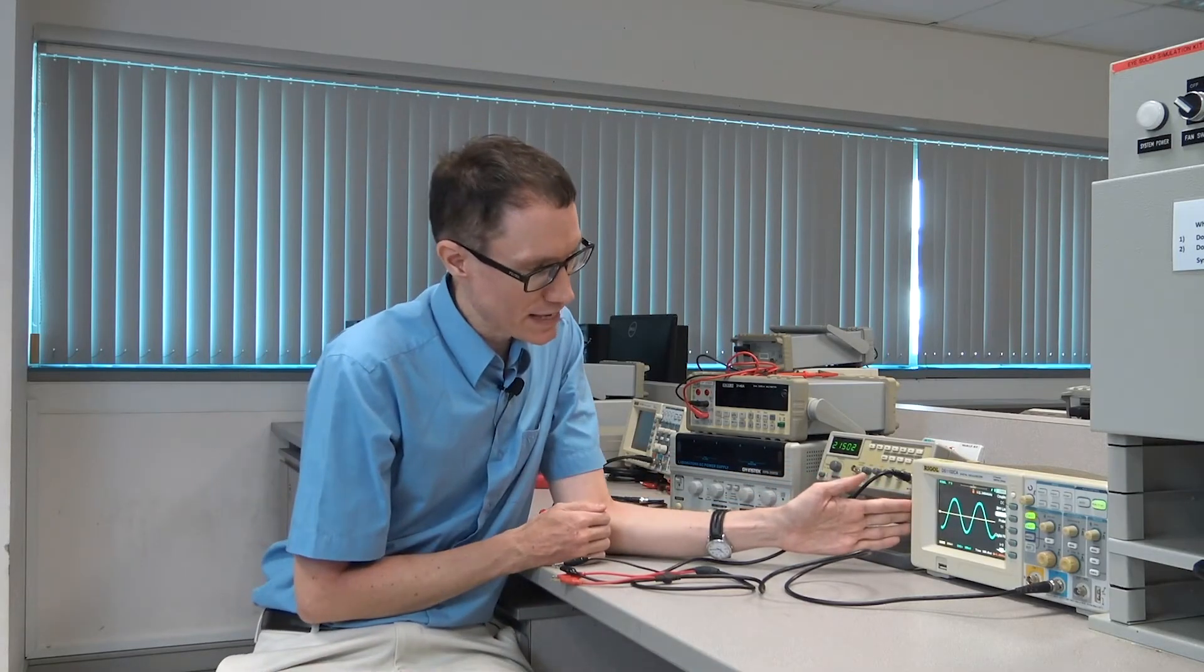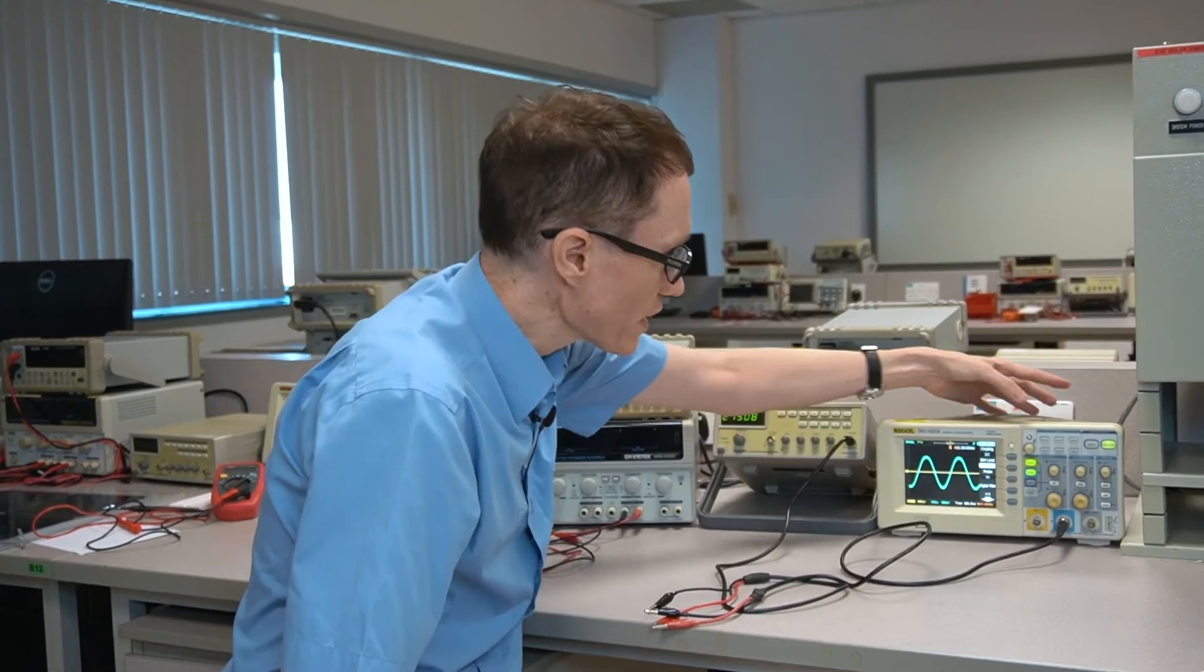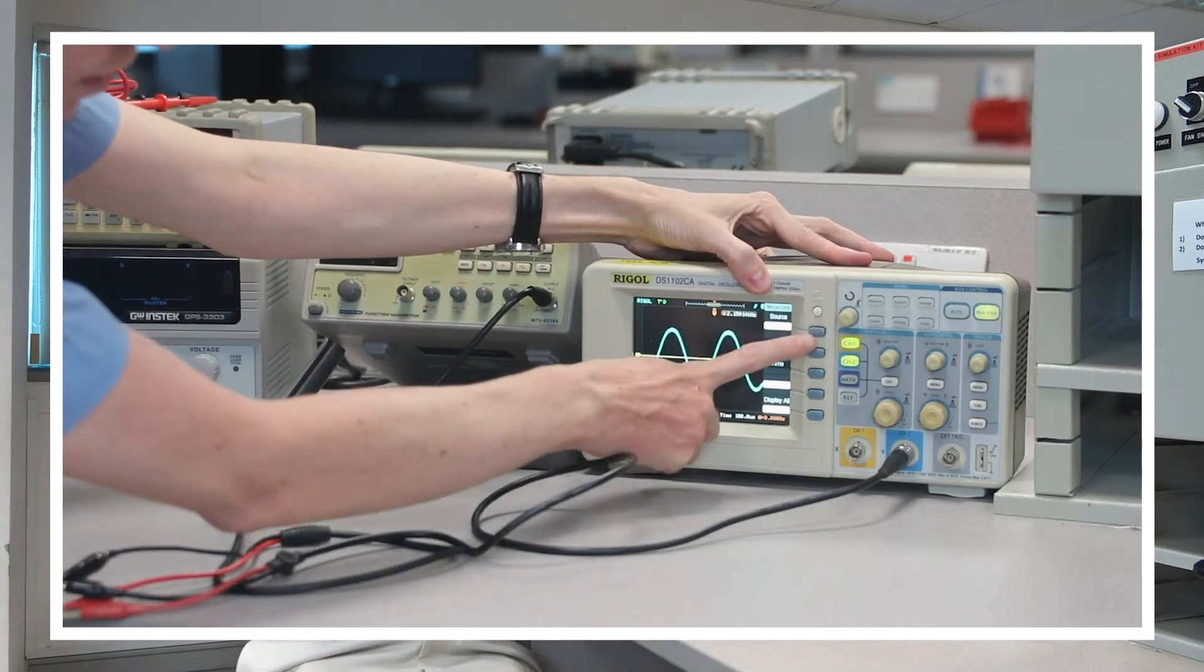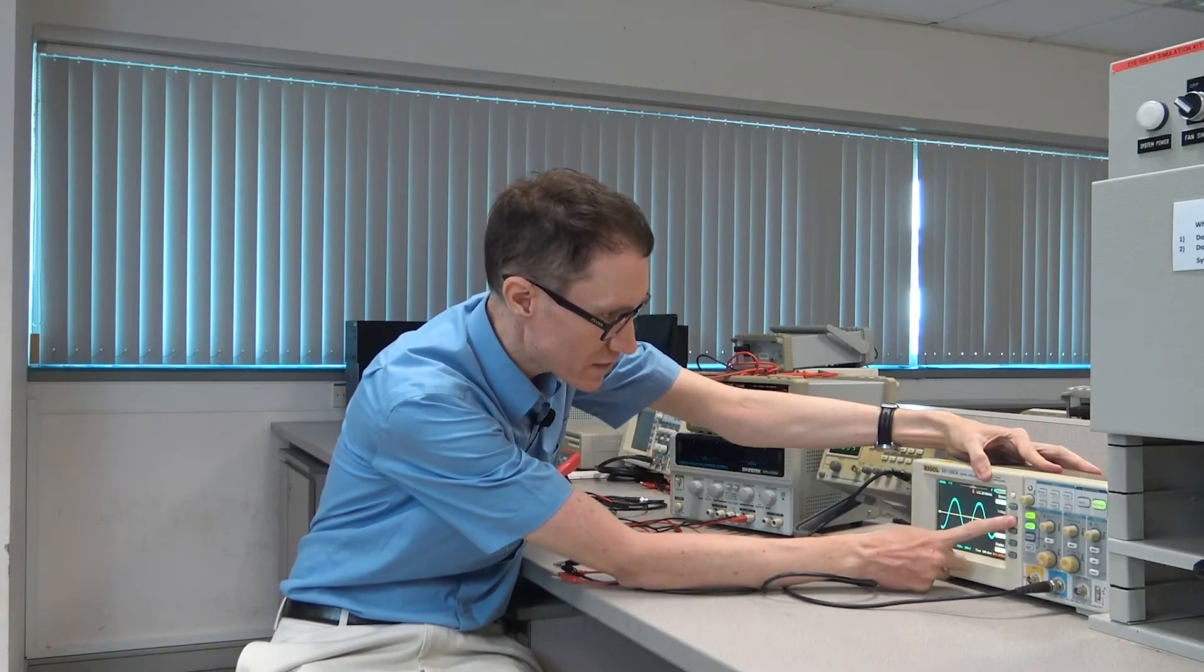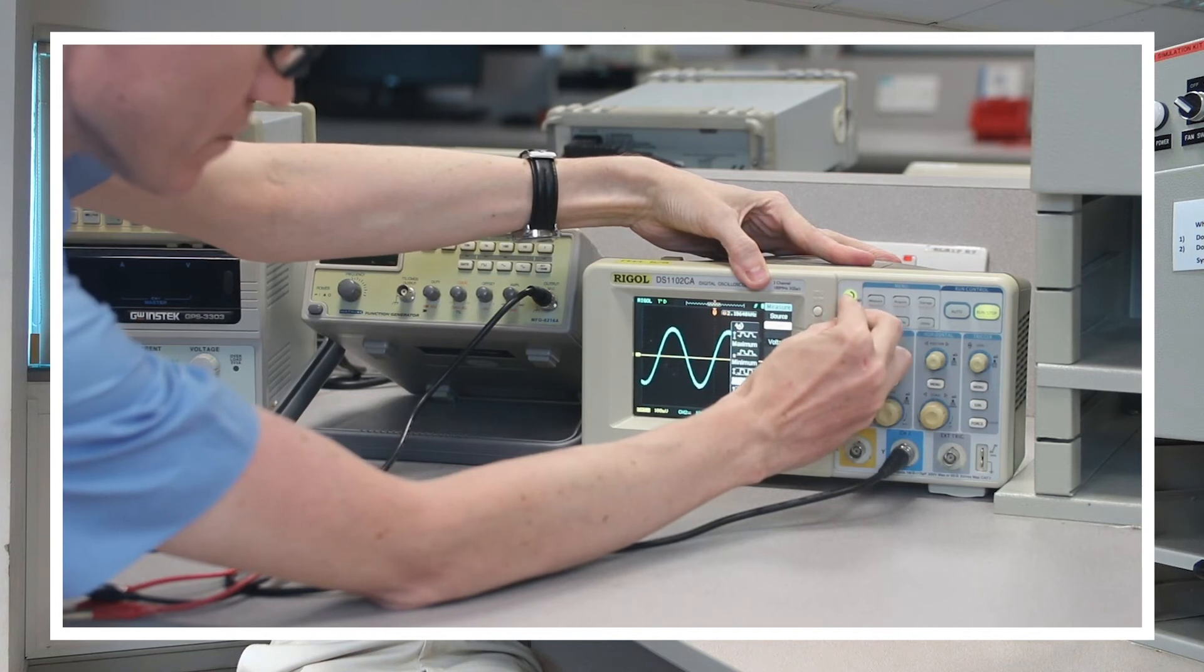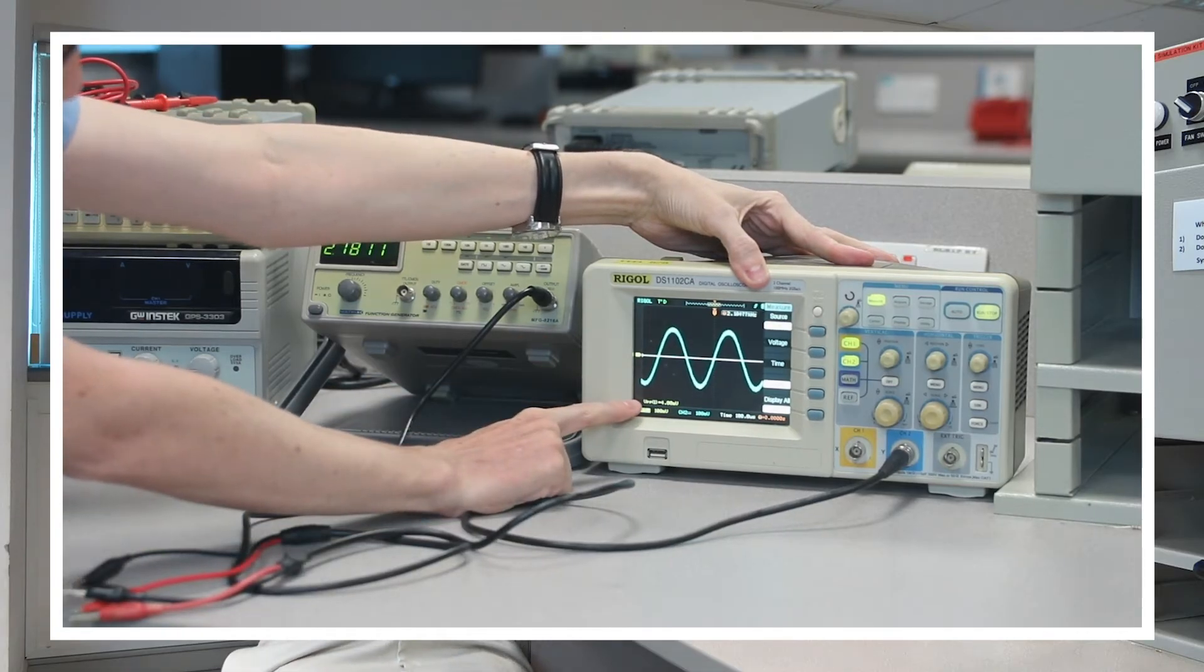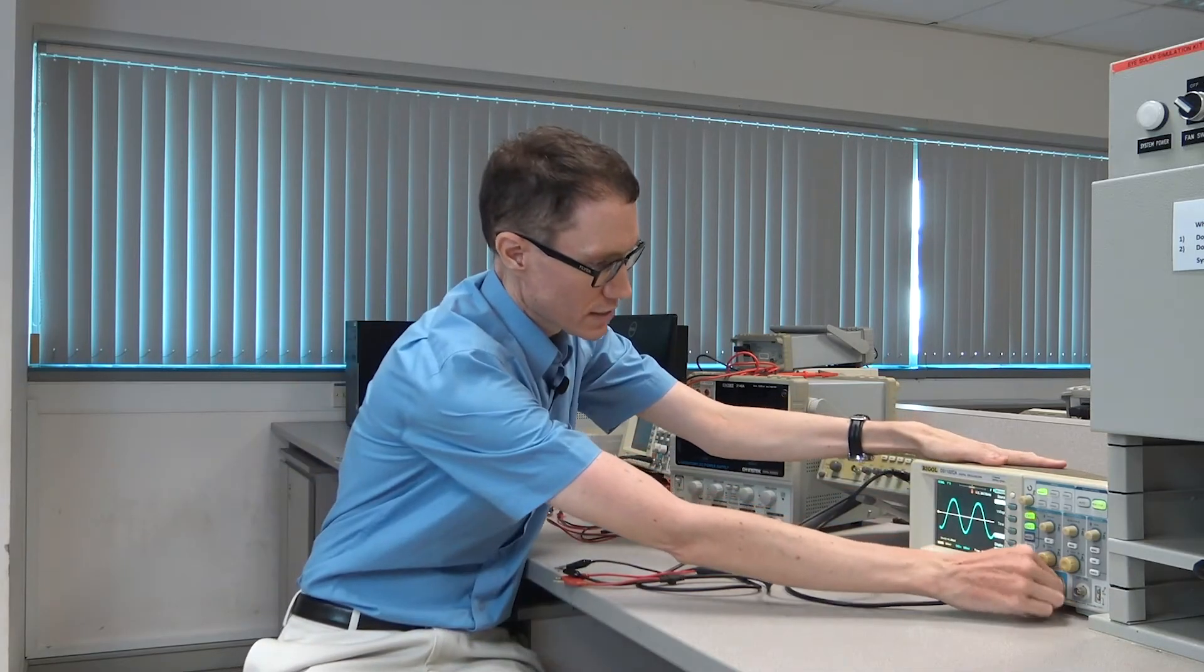Now, what's nice about the oscilloscope is that it can allow us to measure some properties of our signal. So if I go here to the measure menu and I hit this button, it gives me some various options and I can control what options are selected with these buttons. For example, if I hit this button that says voltage and then I scroll it down to peak to peak and I push in on the knob, then it's now showing me the peak to peak voltage of my channel and it's yellow. So that's channel one instead of channel two.